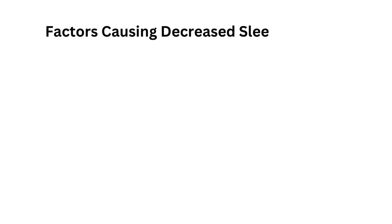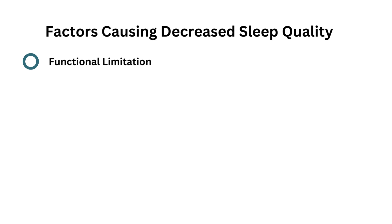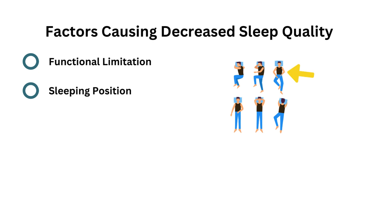Different factors play an important role in decreasing sleep quality. Functional limitation hinders tossing and turning throughout the night. Sleeping position also matters — the supine position causes significantly lower subacromial pressure compared to prone or lateral decubitus position, and leads to progression of degenerative changes and muscle atrophy.